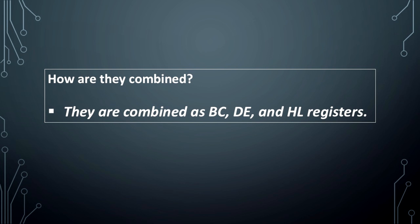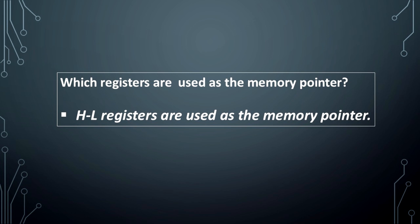How are they combined? They are combined as B, C, D, E, and H, L register pairs. Which registers are used as the memory pointer?